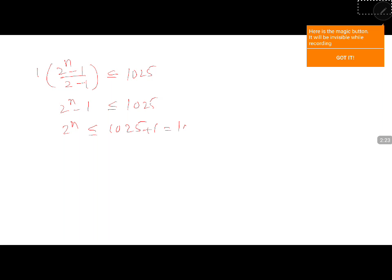Or 2 power n less than or equal to 1025 plus 1 or 1026. But 2 power n must be less than 1026, which implies 2 power 10 is equal to 1024.